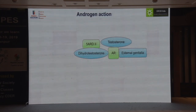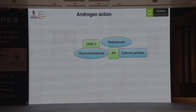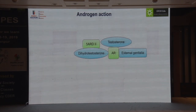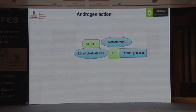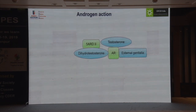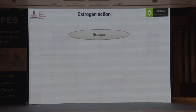In 5-alpha reductase deficiency, DHT is not formed. The internal genitalia, where testosterone is locally produced at high concentration, will not be affected. However, the external genitalia — where testosterone must travel via blood — will be affected, typically presenting as penoscrotal hypospadias. As the patient becomes pubertal and testosterone levels rise, virilization will occur. This is sometimes called 'Shikhandi syndrome' — a classical description in our own literature of someone born female who developed into a male around age ten.